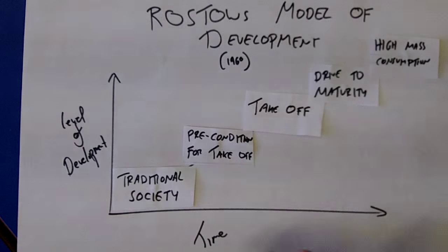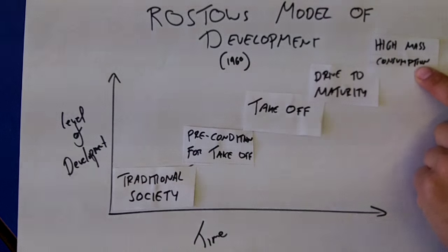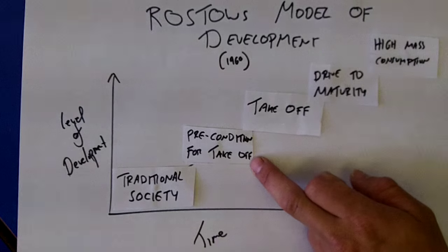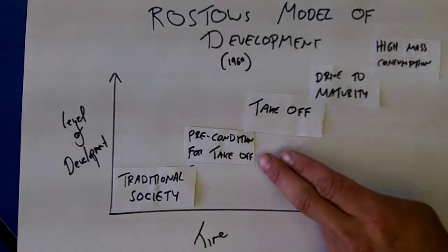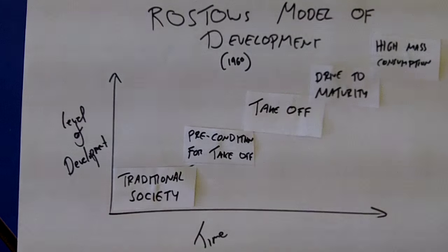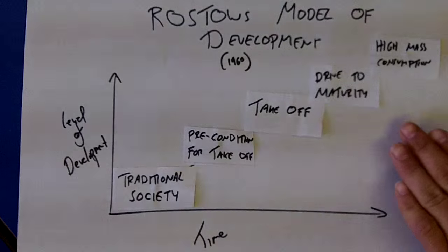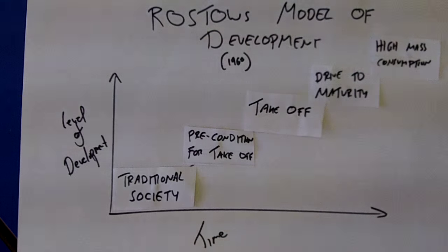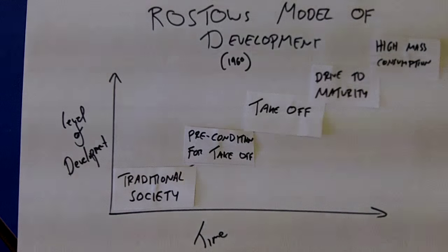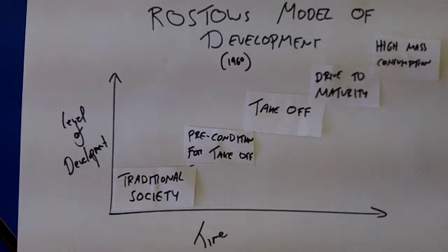You'd also want to consider whether all countries can actually move up the stages. For countries with high mass consumption, it's convenient to have countries stuck lower down, because they can access raw materials and labour far more cheaply. A developmental cynic would suggest that Rostow assumes all governments and all people are trying to progress through the stages, but actually certain people in certain countries might have a vested interest in halting or slowing the development of countries lower down the continuum. That gives you an overview of Rostow's model — it's something to learn, but also something to be able to critique.